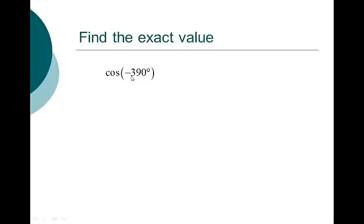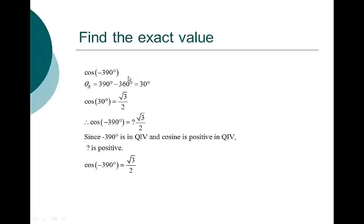Cosine of negative 390: cosine is a little different because the cosine of negative 390 is the same as the cosine of 390 degrees. 390 minus 360 is 30 degrees, so we're talking about the 30-degree angle in quadrant 1. The cosine of 30 degrees is square root of 3 over 2. Since negative 390 ends up in quadrant 4 going clockwise — a whole trip around plus 30 degrees — and cosine is positive in quadrant 4, the answer is positive square root of 3 over 2.